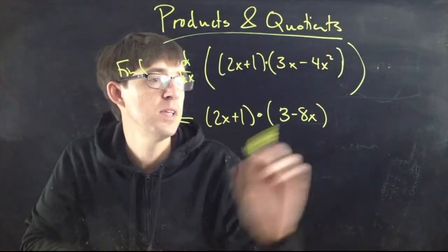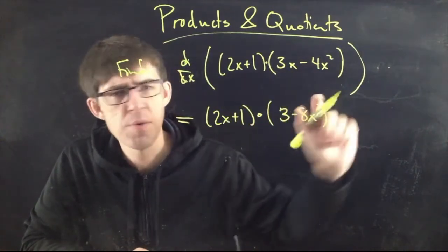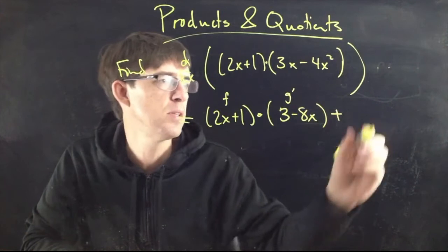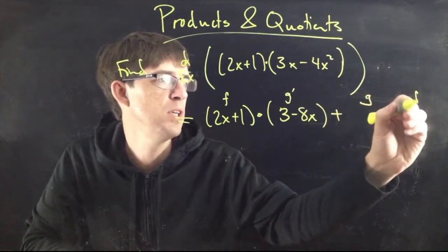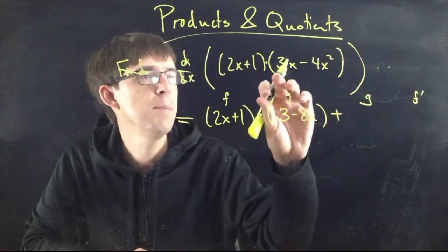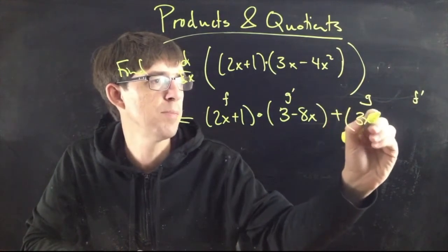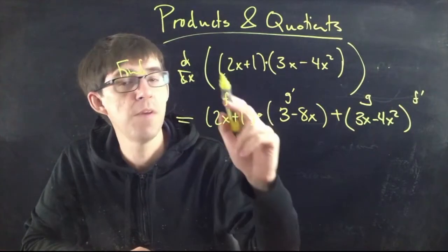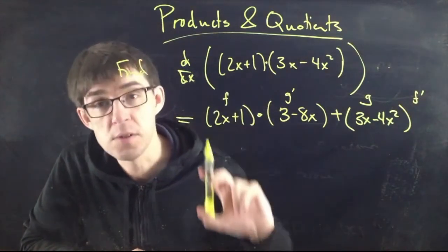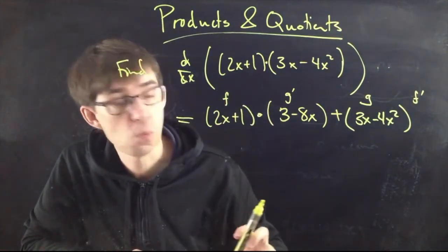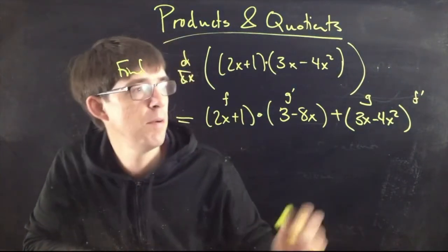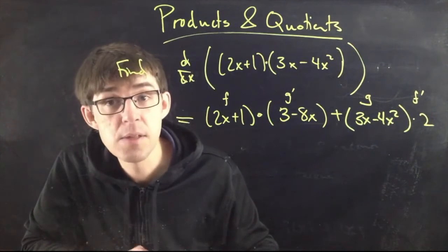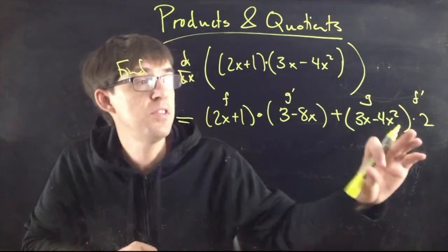Using the product rule: the first thing times the derivative of the second thing, plus the second thing times the derivative of the first thing. The first thing is (2x+1) times the derivative of the second part, which is (3−8x). Then plus the second thing (3x−4x²) times f′, which is the derivative of (2x+1) = 2. That is the derivative.